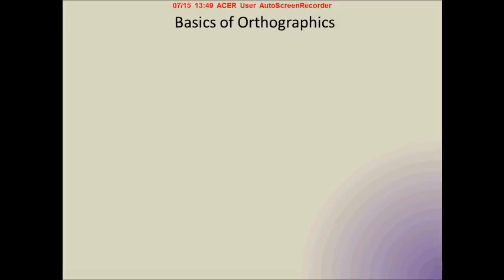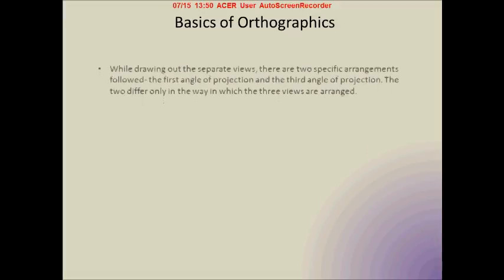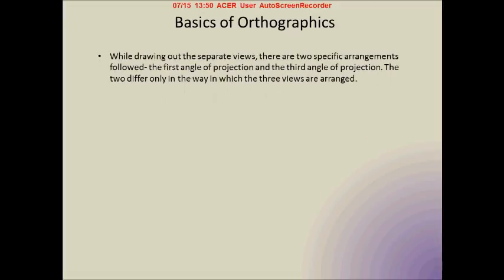Now we come to the basics of orthographics. The important thing to remember is that there is a specific relative positioning of the three views. We cannot just draw the three views anywhere we want on the paper. There are two kinds of arrangements: they are called the first angle of projection and the third angle of projection. The only difference between the two is the way in which the three views are arranged.